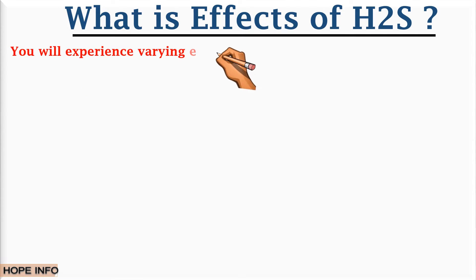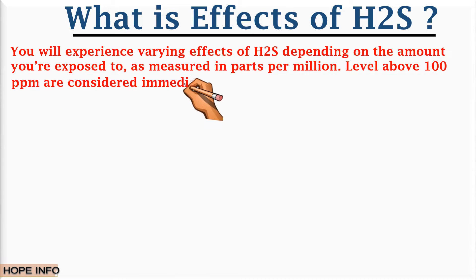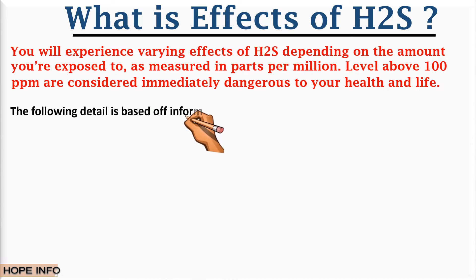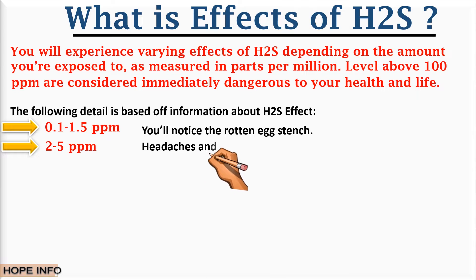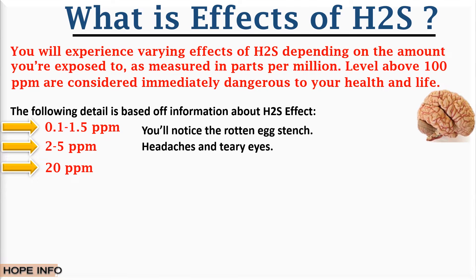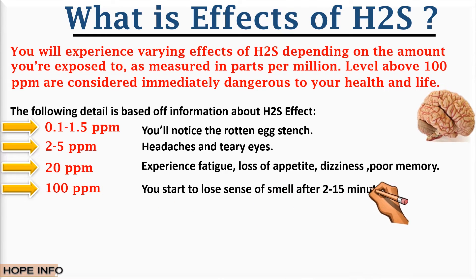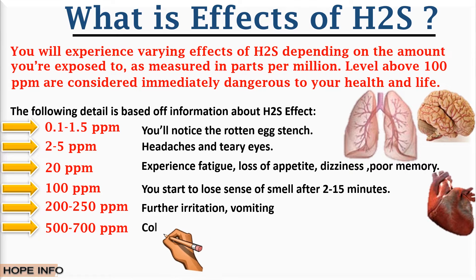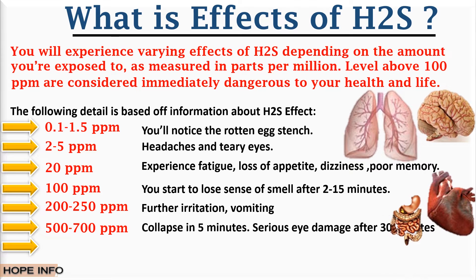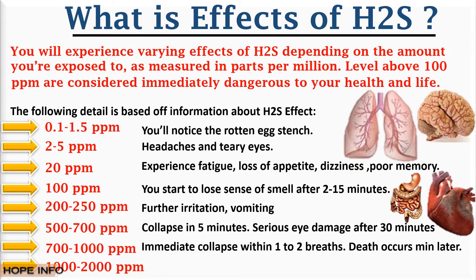At extreme temperatures such as 460 degrees Fahrenheit, H2S will auto-ignite. Effects of H2S vary depending on the concentration you are exposed to, measured in parts per million. Levels above 100 ppm are considered immediately dangerous to health and life. At 0.1 to 1.5 ppm you will notice the rotten egg smell; 2 to 5 ppm long exposure may result in nausea, headaches, and teary eyes; 20 ppm causes fatigue, loss of appetite, poor memory, and headache; 100 ppm you start to lose sense of smell after 2 to 15 minutes; 200 to 250 ppm causes further irritation and vomiting; 500 to 700 ppm causes collapse in 5 minutes and serious eye damage after 30 minutes; 700 to 1000 ppm causes immediate collapse within one minute; and 1000+ ppm results in near-instant death.